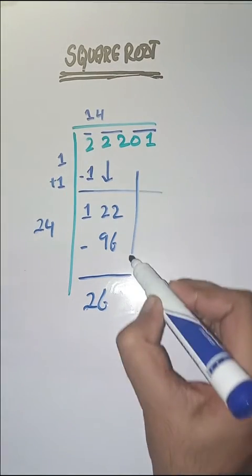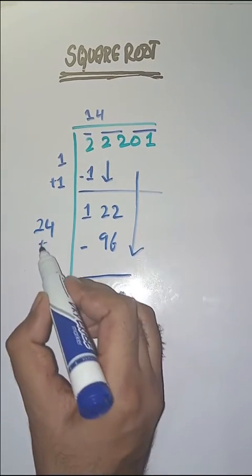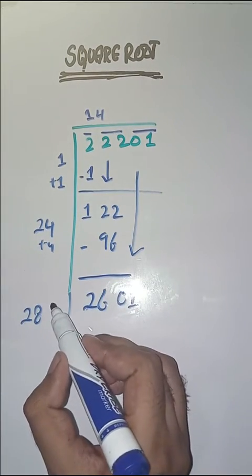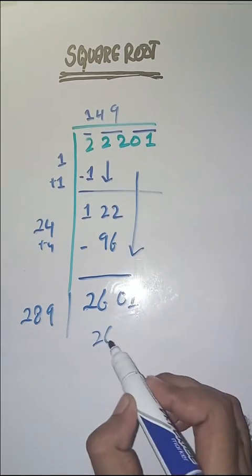Next pair is 01. We bring this down. Here we do 24 plus 4 which is equal to 28. Now we will take a number 9. 289 times 9 is 2601.